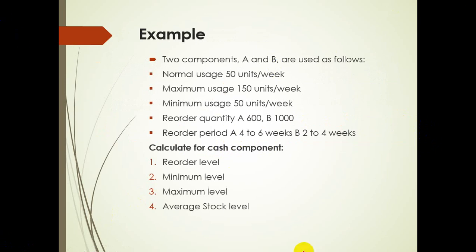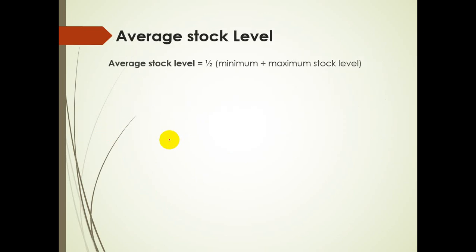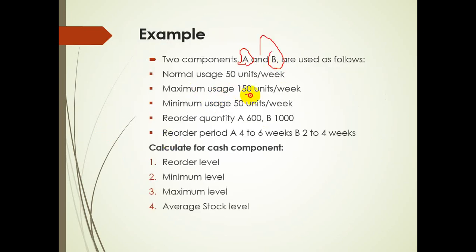An example: two components A and B. Normal usage is 50 units, maximum is 150 units, minimum is 50 units. Reorder quantity for A is 600 pieces and for B is 1000. The reorder period for A is 4 to 6 weeks, and for B is 2 to 4 weeks. Applying the formula: maximum usage is 150 for both.